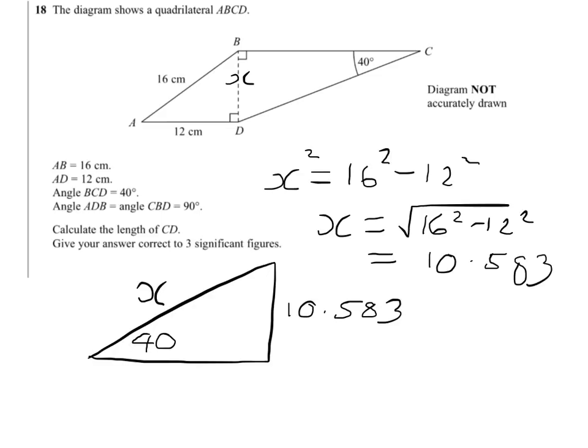So sine 40 degrees equals 10.583 divided by X. To solve for X, we swap X with sine 40, giving X equals 10.583 divided by sine 40.